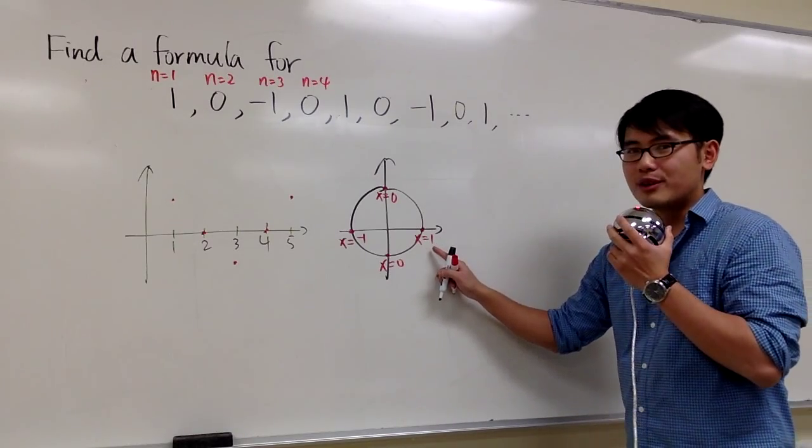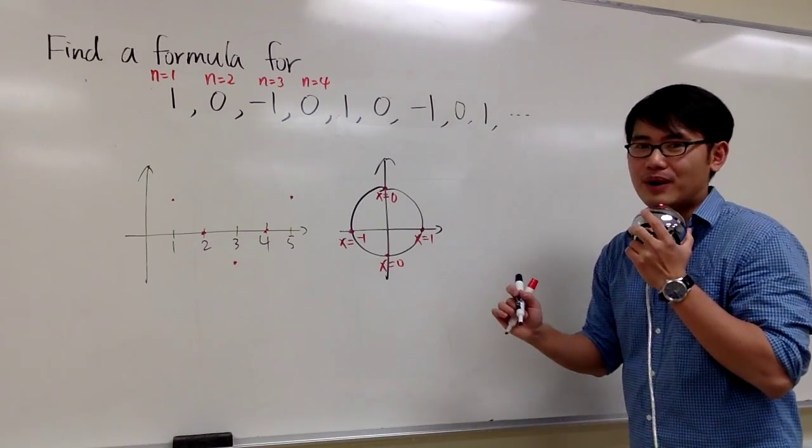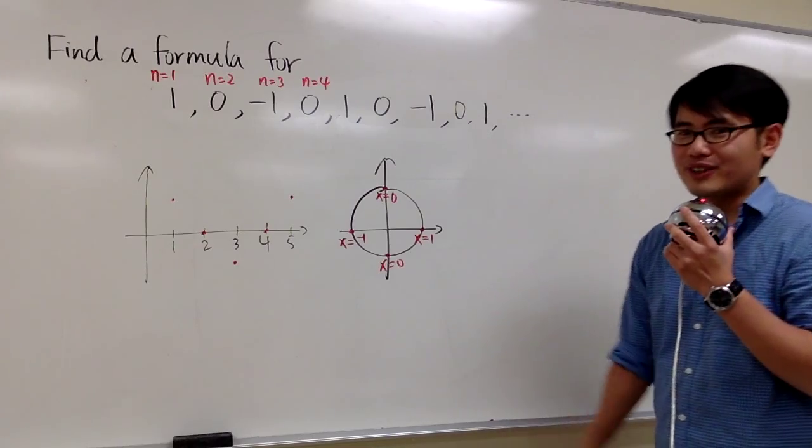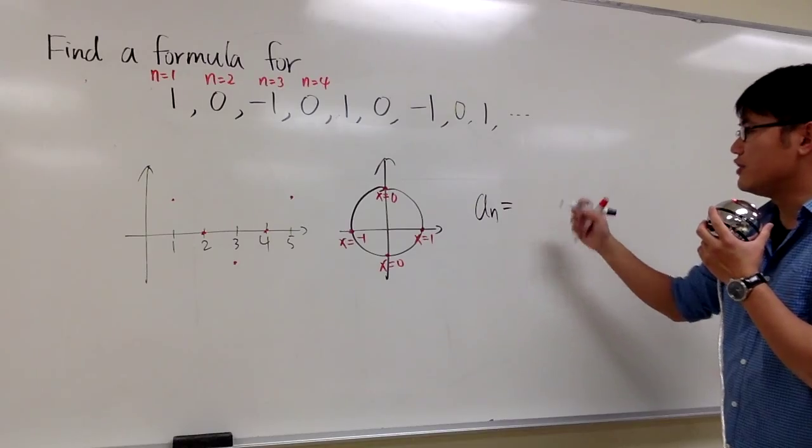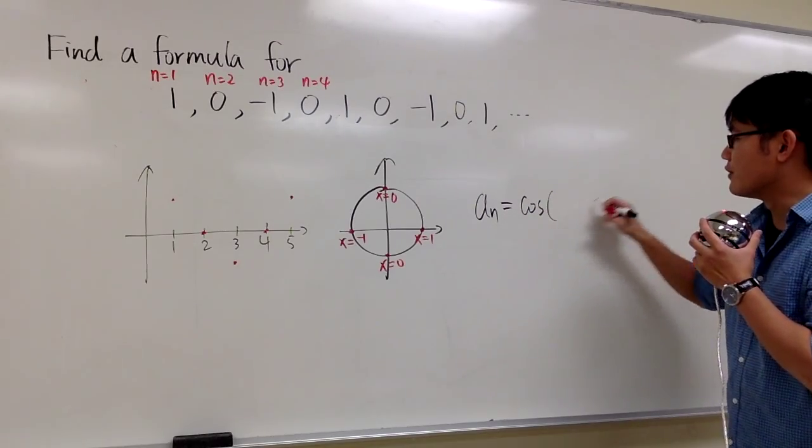So, because we are talking about the unit circle, and then we are talking about the x value, so that's the cosine function that we can use. And I will just call this sequence, an, just to give you a name. It's going to be cosine of something.